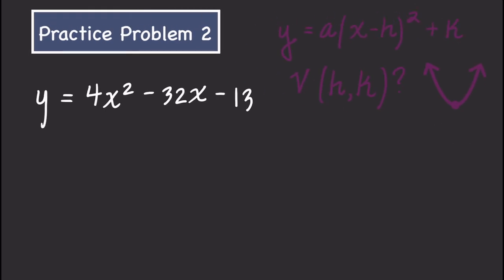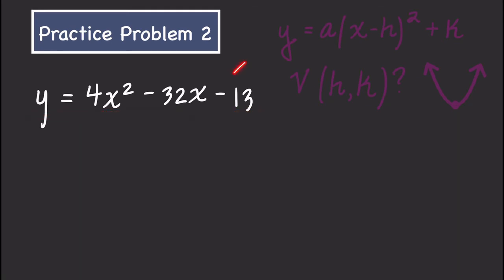Let's do a second practice problem. This time we're going to turn our equation into the vertex form of a parabola: a(x - h)² + k, where the vertex is the point (h, k). A parabola is a U-shaped curve that can face up or down — the coefficient a determines that. The vertex is the turning point. If we can rewrite our equation in vertex form, we can easily identify the vertex coordinates.